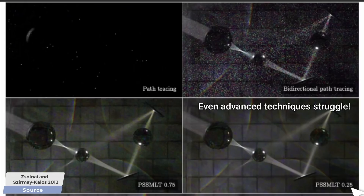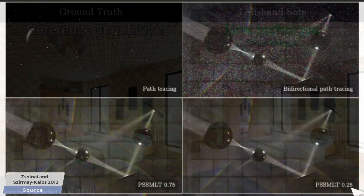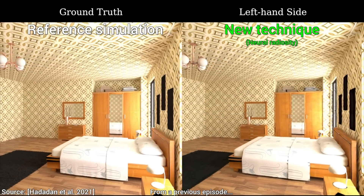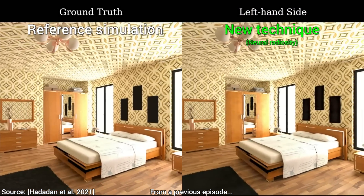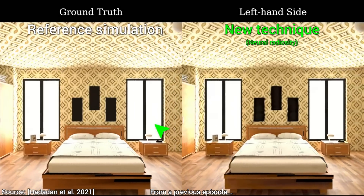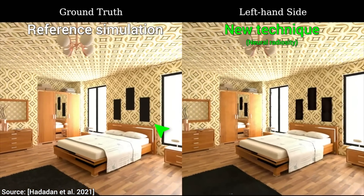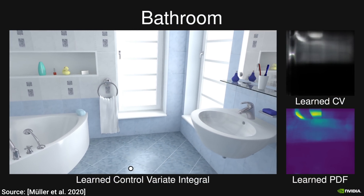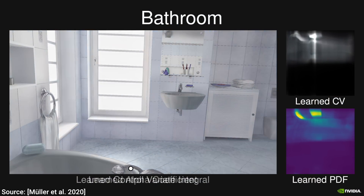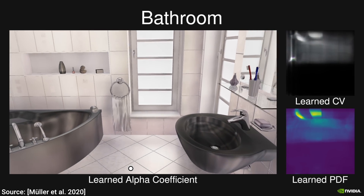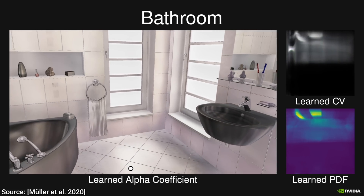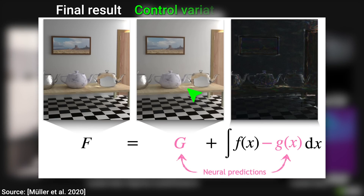However, these days, neural network-based learning methods are already capable of doing light transport. So, why not use them? Well, yes they are, but they are not perfect, and we don't want an imperfect result. So, scientists at NVIDIA said that this might be the perfect opportunity to use control variates. What are those, and why is this the perfect opportunity?